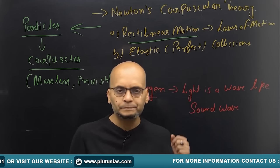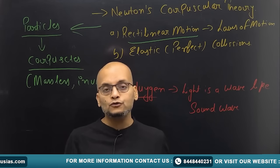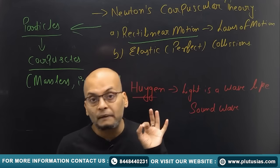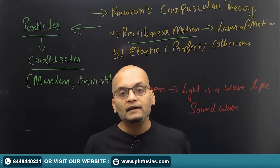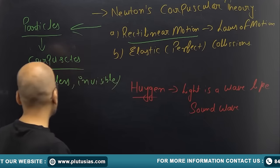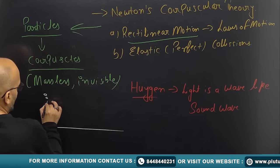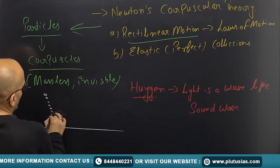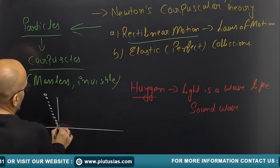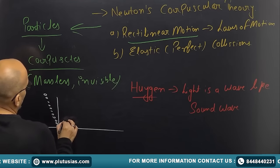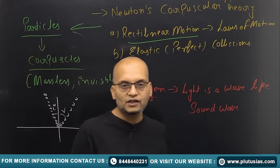Newton then suggested that light particles, that is corpuscles, will undergo a perfectly elastic collision with the surface on which they are incident. If light is incident on a surface, these small corpuscles will undergo a perfect elastic oblique collision, which results in the reflection of light — thereby explaining the law of reflection.